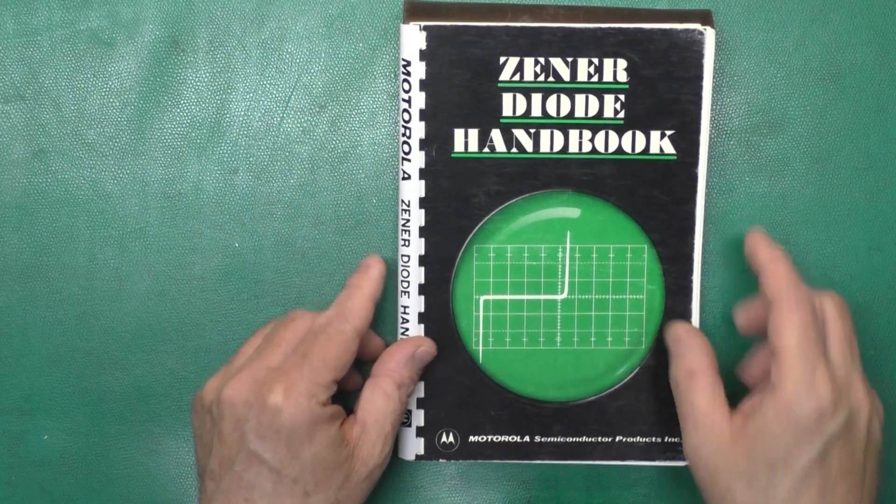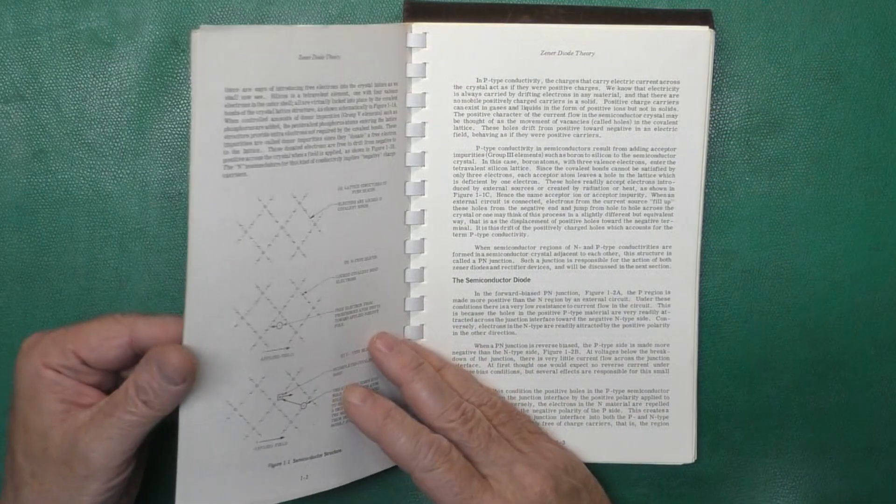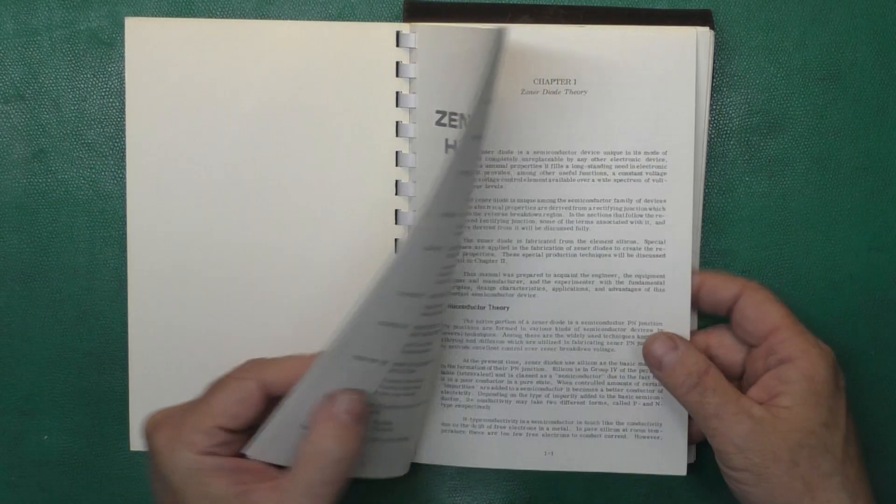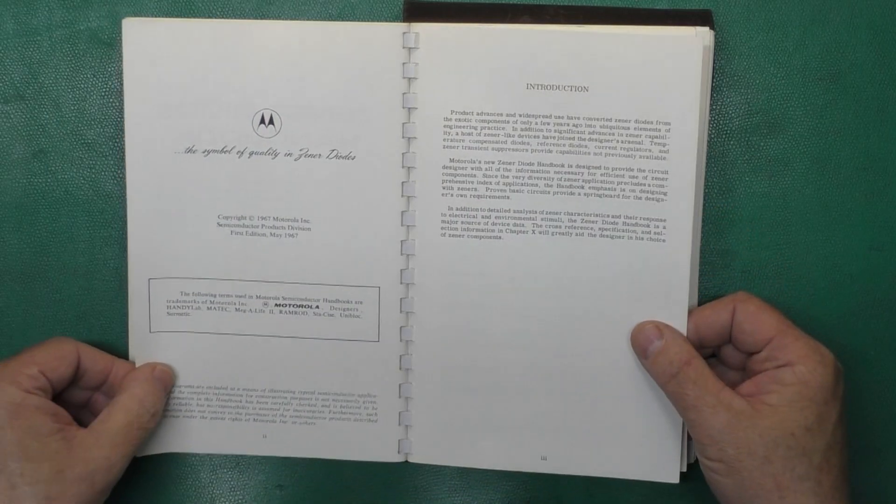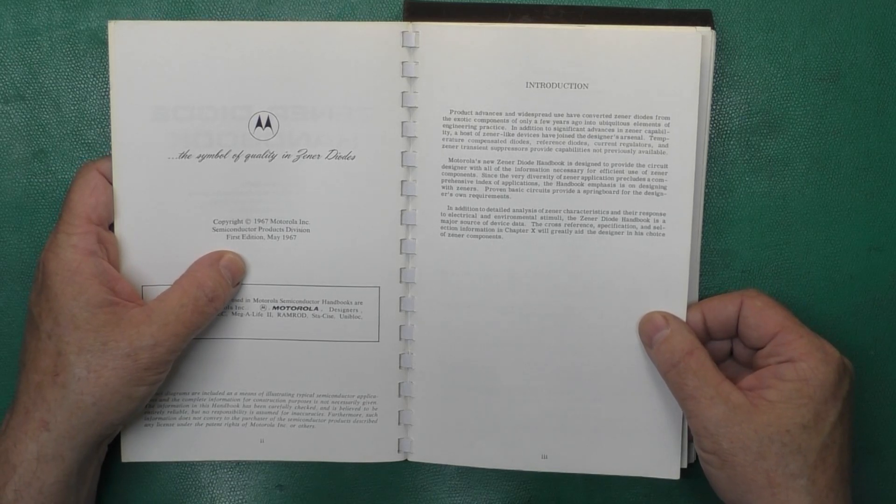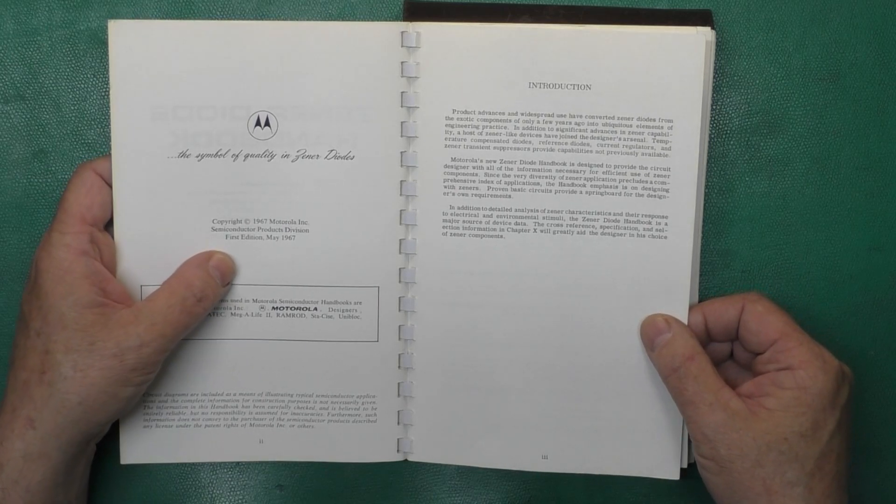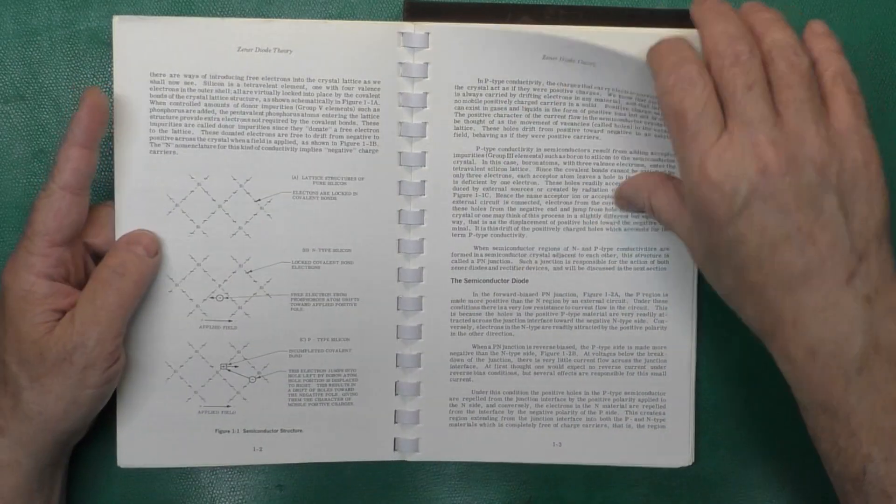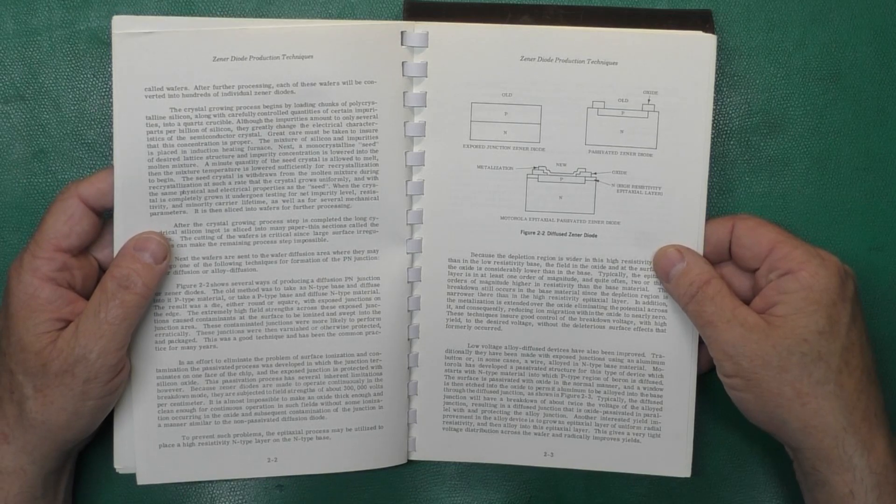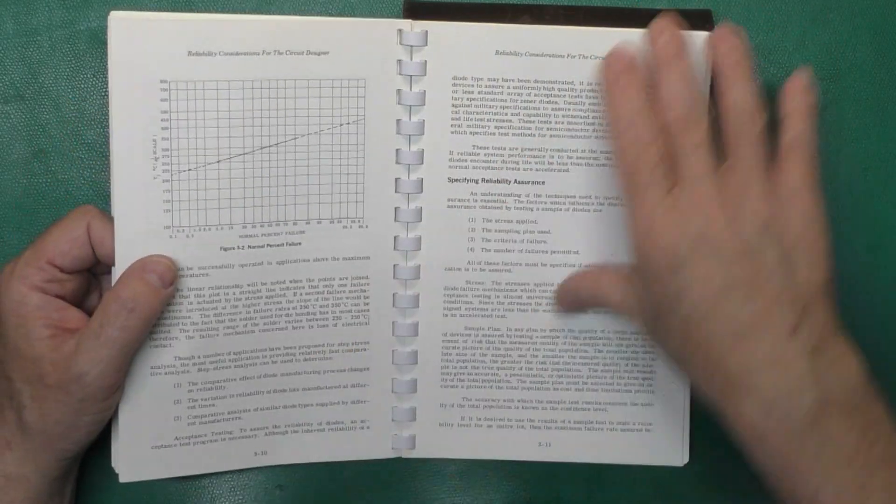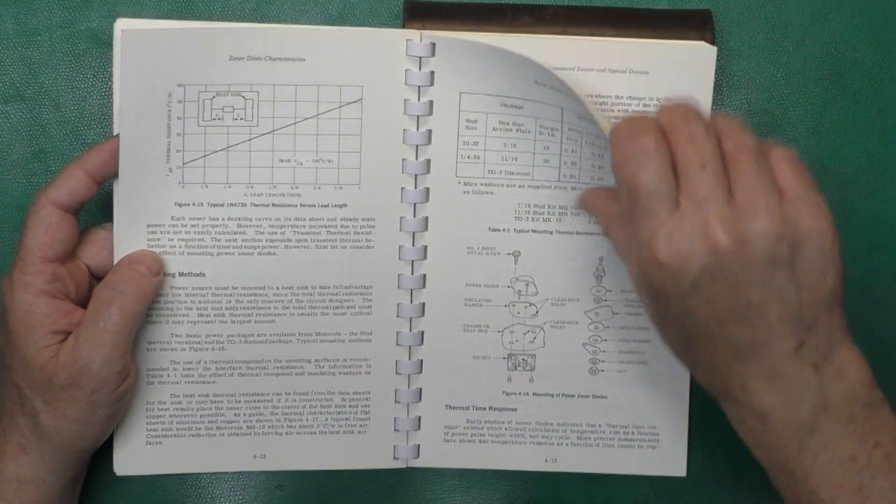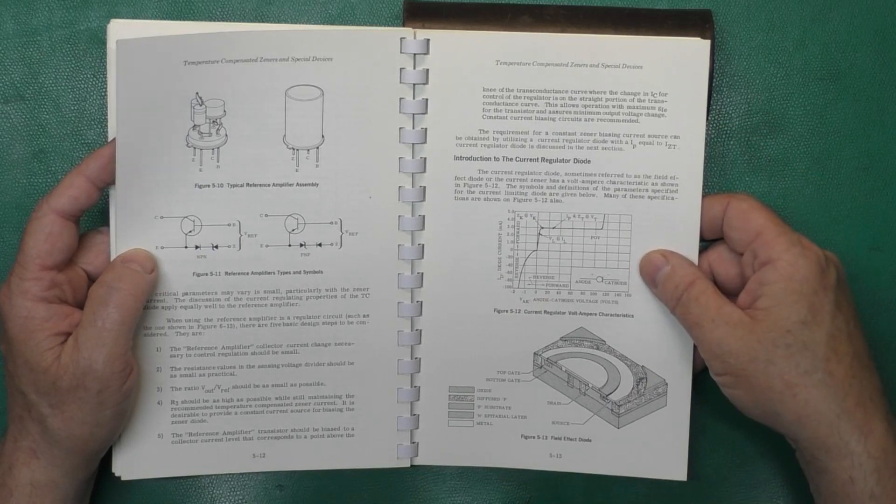Here is another really good reference, the Zener Diode Handbook by Motorola. This tells you all about Zener Diodes. This is the first edition, it looks like. Copyright 1967. This is about a year and a few months older than me. So Zener Diodes were still newish at this time, and they're telling you how they're built and how they work, and that type of thing. Very interesting.